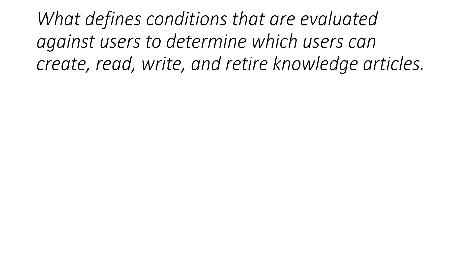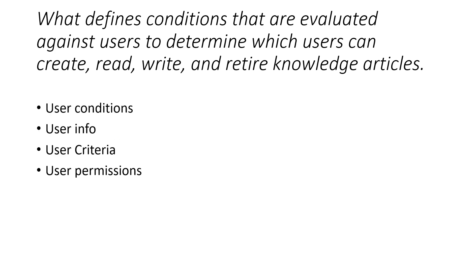Question nine: what defines conditions evaluated against users to determine which users can create, read, write, and return knowledge articles? Options: user conditions — not a thing in knowledge management; user info — not relevant; user permissions — no such thing; but user criteria exists in the knowledge module and allows you to give access to particular groups or companies. The right answer is user criteria.